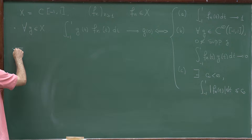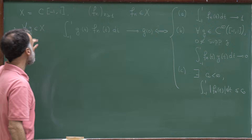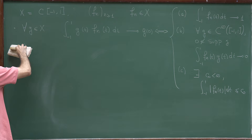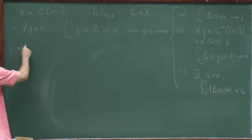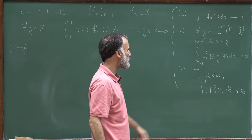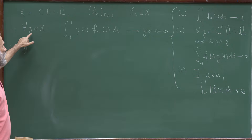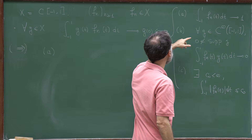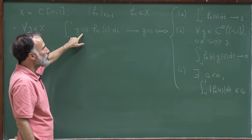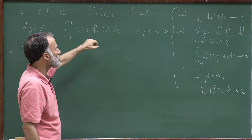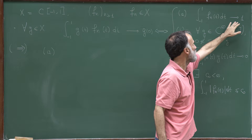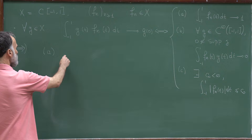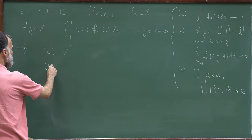Let me first prove that the limit implies the three conditions. Assuming the convergence holds for any continuous G: condition A is trivially satisfied by taking G equal to 1, since the integral of f_n becomes the integral of f_n times 1, and G(0) equals 1. So condition A is satisfied whenever this convergence occurs.